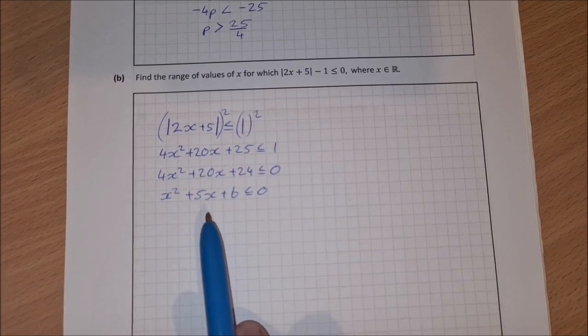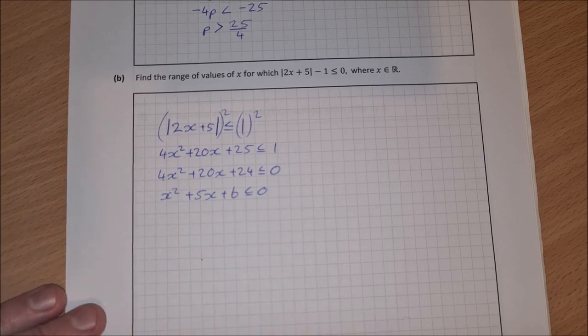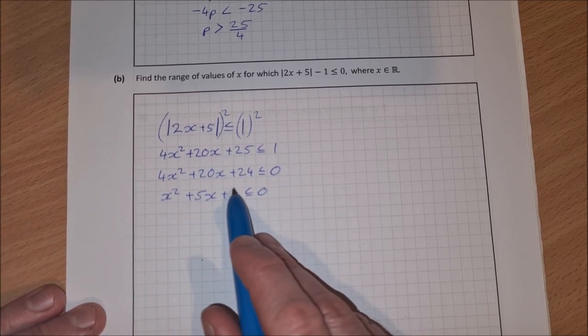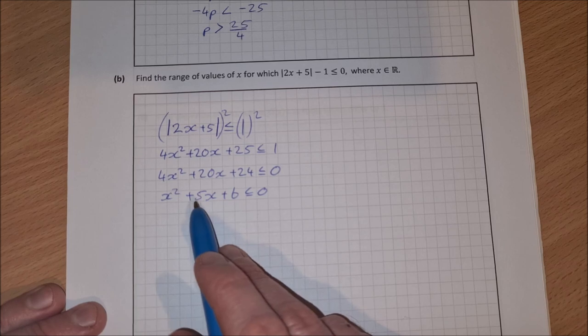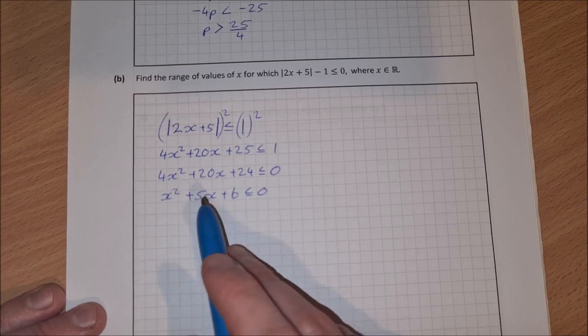That'll give me x squared plus 5x plus 6 is less than or equal to 0. And now I want to factorize this like a quadratic equation. So that will be factors of 6 that add together to give you 5. So that's obviously going to be 3 and 2.